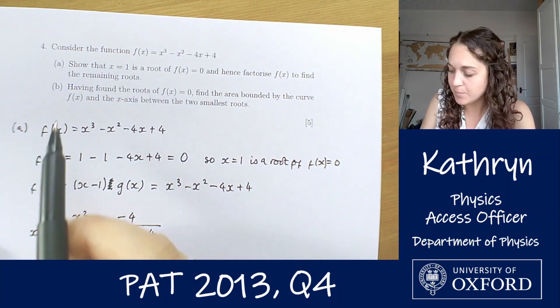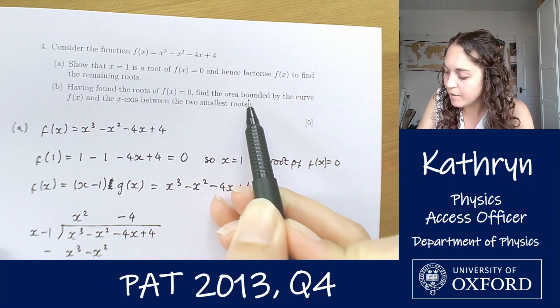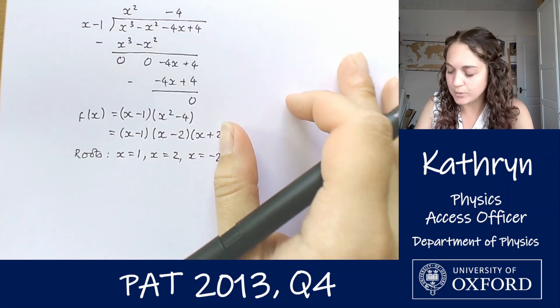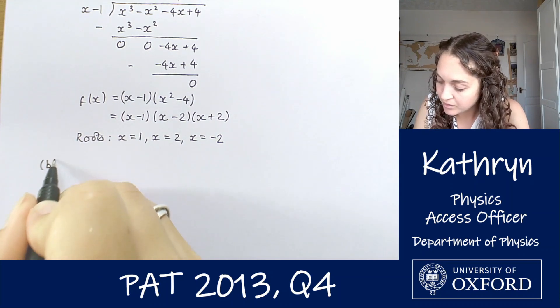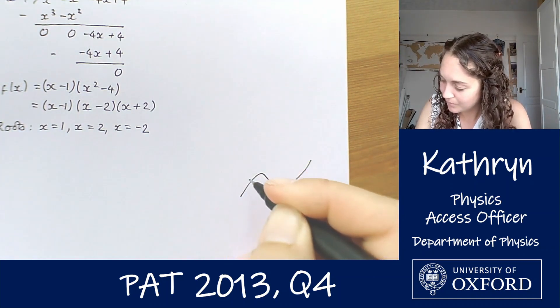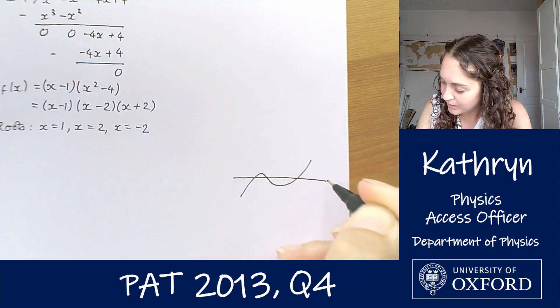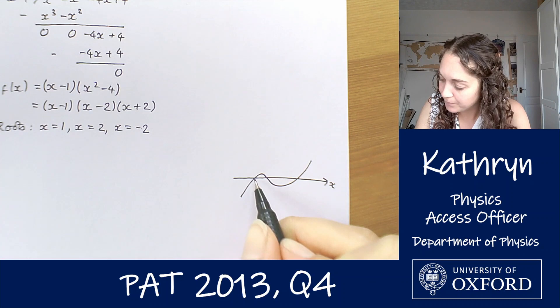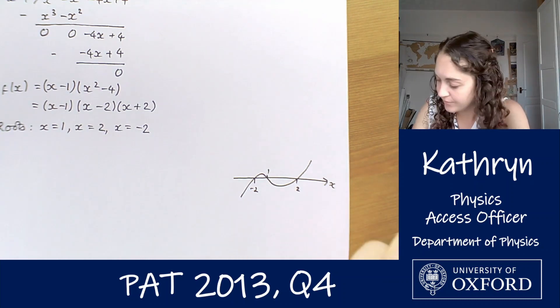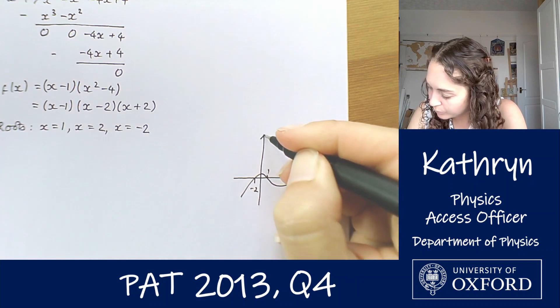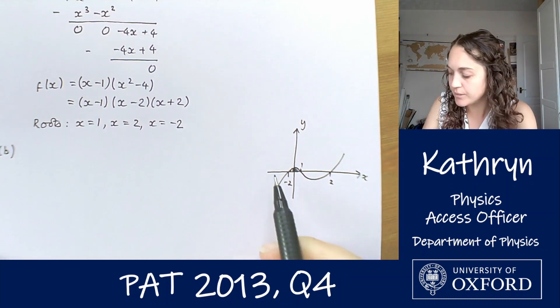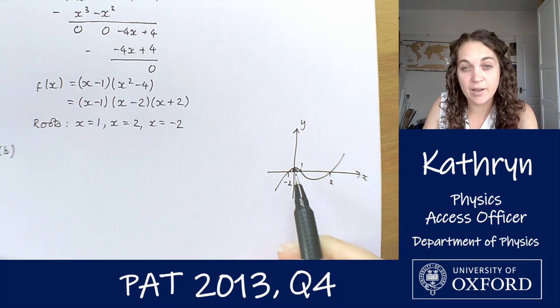So we can now go on to part b. Part b says, having found the roots of f(x) equals 0, find the area bounded by the curve f(x) and the x-axis between the two smallest roots. I don't know exactly what this curve looks like, but I know what a general cubic graph looks like. Cubic graphs look sort of like that. Our roots are at minus 2, plus 2, and 1. What we're being asked to find is this area here, between the two smallest roots, but bounded by the curve and the x-axis.